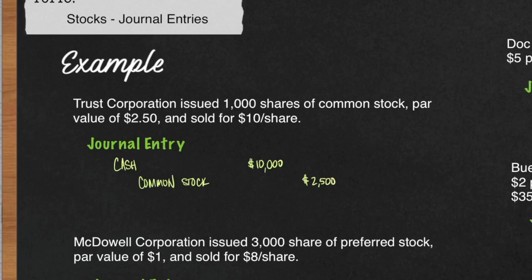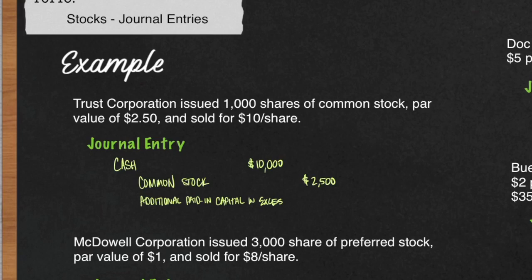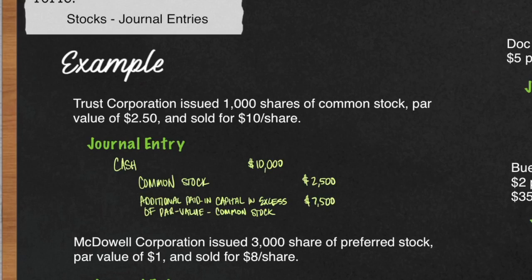Now your debits and credits do not equal, and you must have more credits. In this case, it's $7,500. That $7,500 will go into an account called additional paid-in capital in excess of par value common stock. Now your debits and credits will equal: a $10,000 debit to cash and two credits — $2,500 to common stock and $7,500 to the additional paid-in capital account.